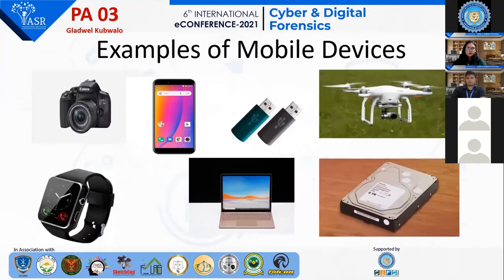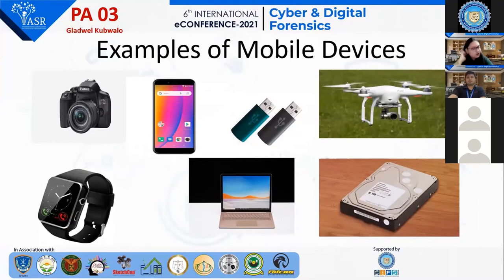Examples of mobile devices from which we can get our digital evidence include the smartwatch — we can get evidence from the smartwatch if it was used in the commission of an offense — as well as drones, cameras, phones, and hard drives.